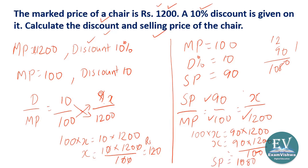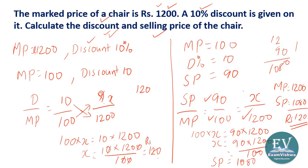The original price is 1200 and the selling price is 1080. The discount is the difference, which is equal to 120 rupees. Understood? This way also we can calculate — discount is 120, selling price is 1080. So there are two ways by which you can get the answer.